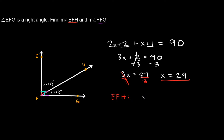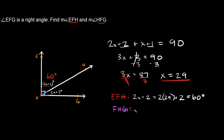For angle EFH, the expression is 2x + 2. Plugging in x = 29: 2 times 29 plus 2 equals 60 degrees. For angle HFG, the expression is x + 1: 29 + 1 = 30 degrees. As a check, 60 + 30 = 90, which matches the original right angle, so we know we did it right.